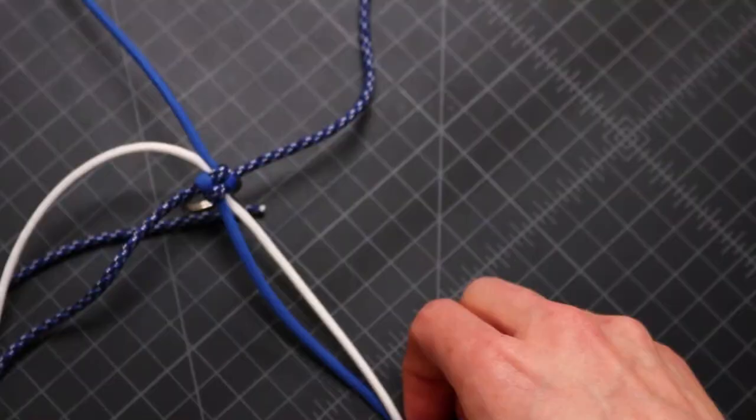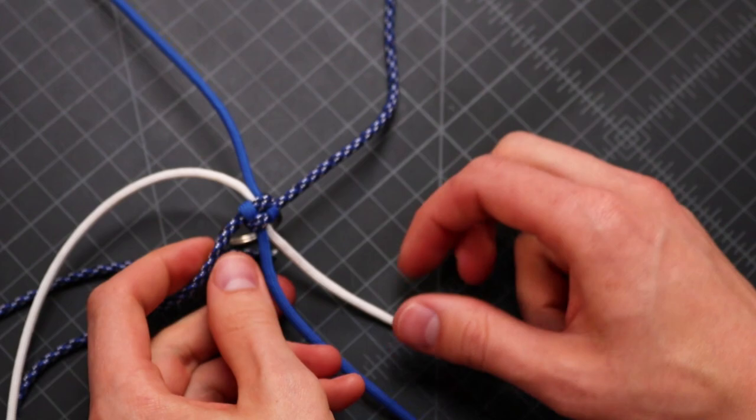So now we should have three colors, six cords with the same colors opposite each other.